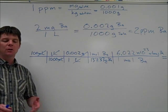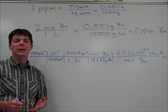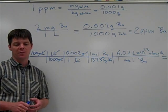Once we've completed our calculation, we'll find an answer of 8.8 times 10 to the 17 atoms of barium.